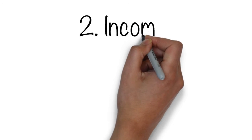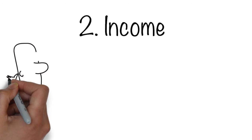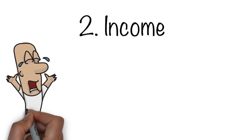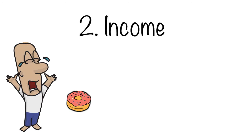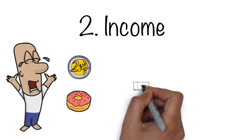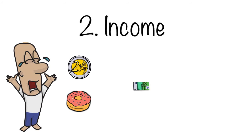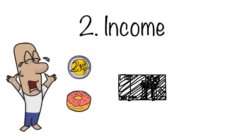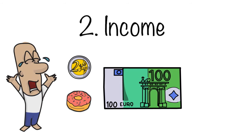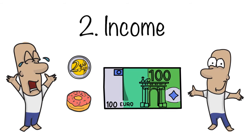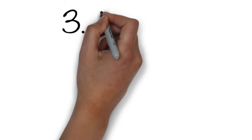The second determinant of demand is income. Take the example of our donut costing two euro — our individual can't afford it based on their current income level; maybe it's the end of the week and they've run out of money. If they get paid again and their income increases, we'll see an increase in demand for the product. So as income increases, the demand for that product tends to increase as well.